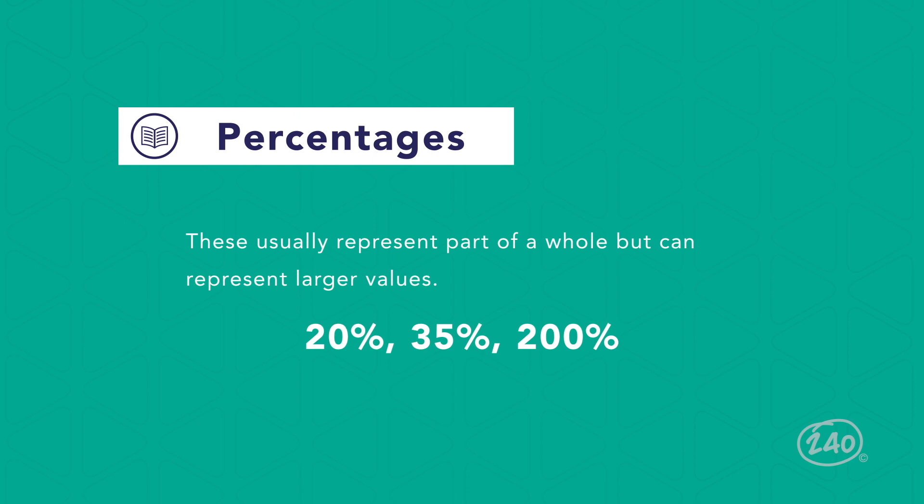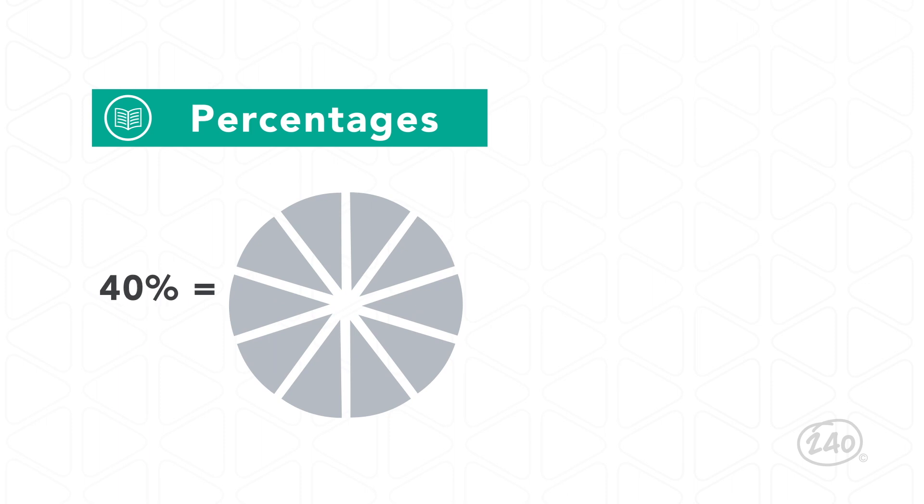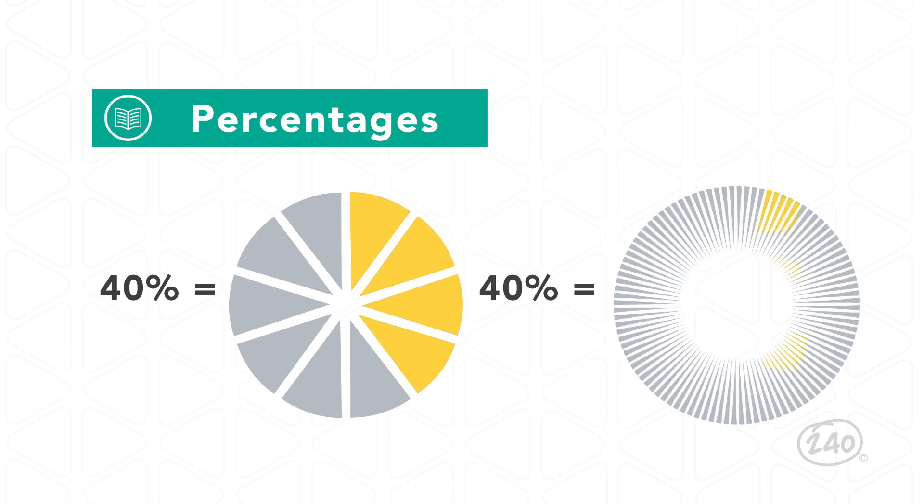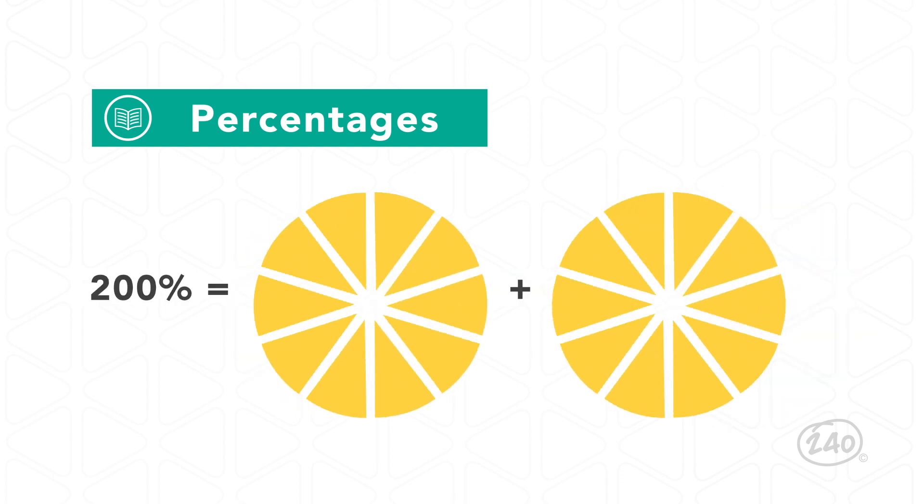Percentages usually represent part of a whole, but can represent larger values. Forty percent, for example, represents four out of ten, or forty out of one hundred parts of one unit. On the other hand, two hundred percent means there are two whole units.